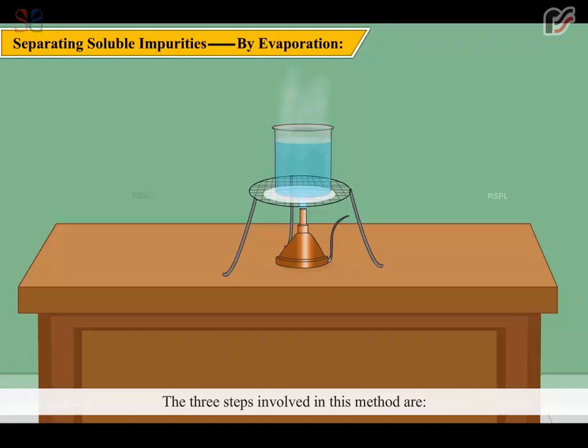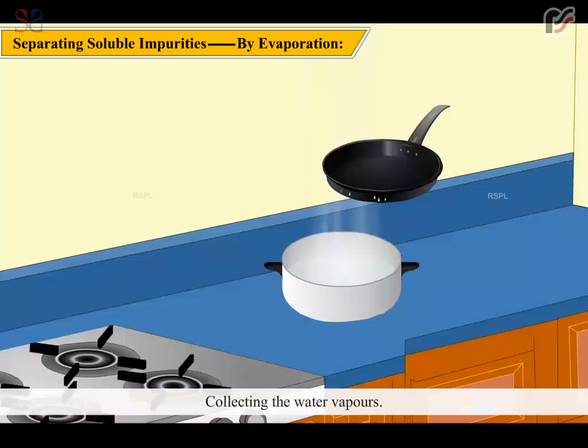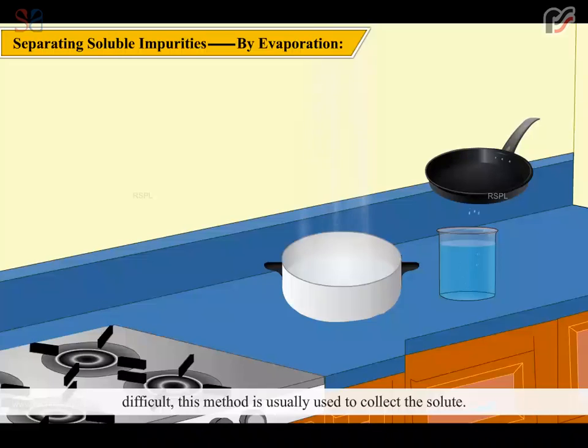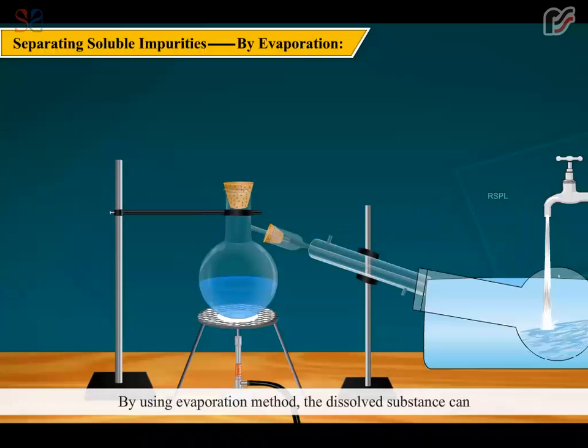The three steps involved in this method are: Heating impure salt water, collecting the water vapors. By cooling the vapors, we get clean water. As collecting the vapors is very difficult, this method is usually used to collect the solute. By using evaporation method, the dissolved substance can be recovered by the solvent. Water is lost.